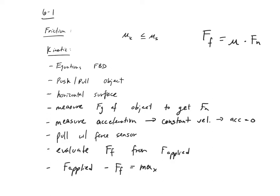Mu is not like density — density is a material property of an object. Mu is a relationship between two surfaces: metal on metal, metal on ice, Teflon on metal. Without knowing the second surface, you can't give a value of mu for one surface alone. It's the resistance to motion based on those two surfaces themselves.